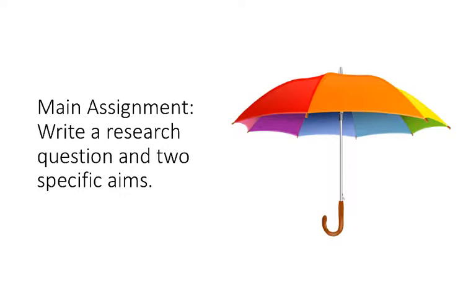This is one of the lighter proposal weeks, and the one main assignment is for you to think about topics you've identified previously and to write a research question and two specific aims related to that. I have an umbrella shown on the right because that's how I like to think about how specific aims relate to a research question — I think of the specific aims as falling under the broader umbrella of our research question.